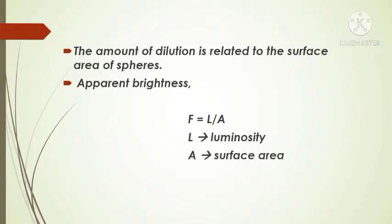The amount of dilution is related to the surface area of the spheres, which is given by A equals 4 pi d squared. Thus, the equation for the apparent brightness of a light source is given by the luminosity divided by the surface area of the sphere with radius equal to your distance from the light source, or f equals L by 4 pi d squared, or L by A, where d is your distance from the light source.